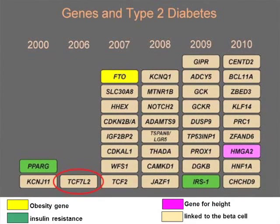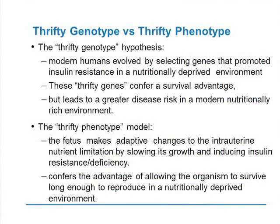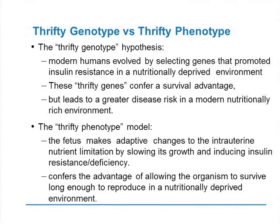If you look at the genes, it's fascinating to note there is only one gene for insulin resistance — the IRS1 gene — whereas there are 28 genes for beta cell function. Clearly the insulin resistance gene is a very protected gene with few significant variations. What we've found is that we've always subscribed to the theory of the thrifty genotype: modern humans evolved by selecting genes that promote insulin resistance in a nutritionally deprived environment, conferring a survival advantage. But in today's world, where most of us are overfed, it tends to become a disease process.